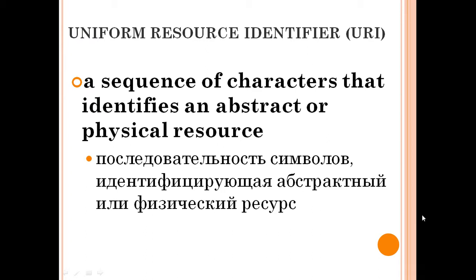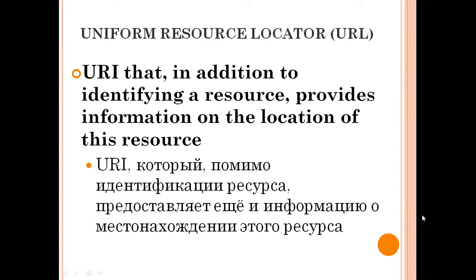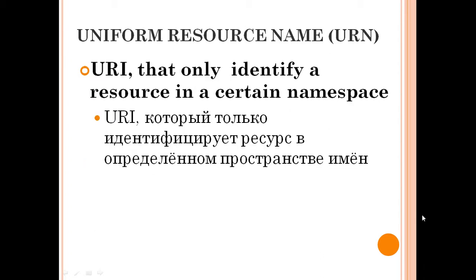Uniform Resource Identifier (URI): a sequence of characters that identifies an abstract or physical resource. Uniform Resource Locator (URL): in addition to identifying a resource, provides information on the location of this resource. Uniform Resource Name (URN): only identifies a resource in a certain namespace.